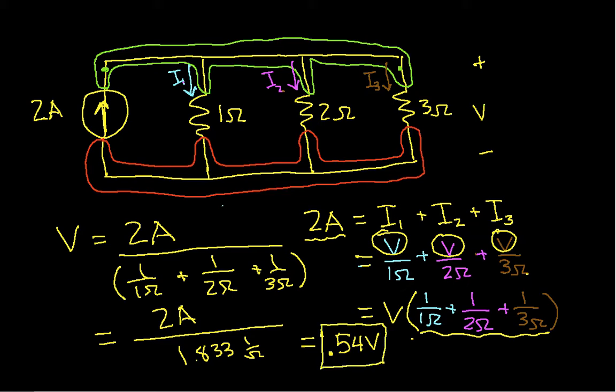The way that we came up with this was to define the unknown voltage V, find the currents through the resistors, and then use Kirchhoff's current law. Now you'll notice that this term here, where I have 1 over 1-ohm, 1 over 2-ohms, and 1 over 3-ohms...